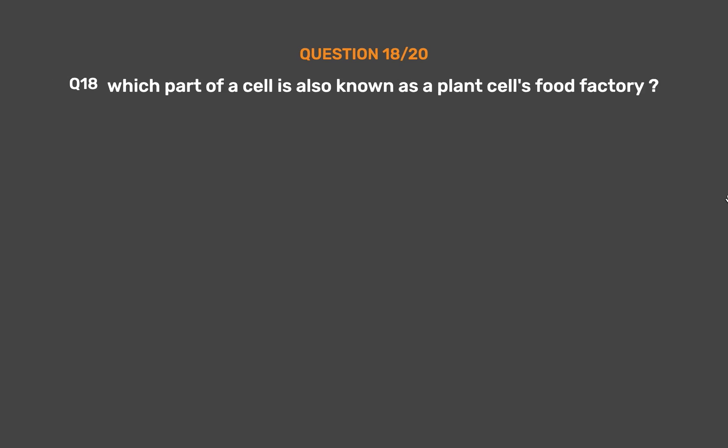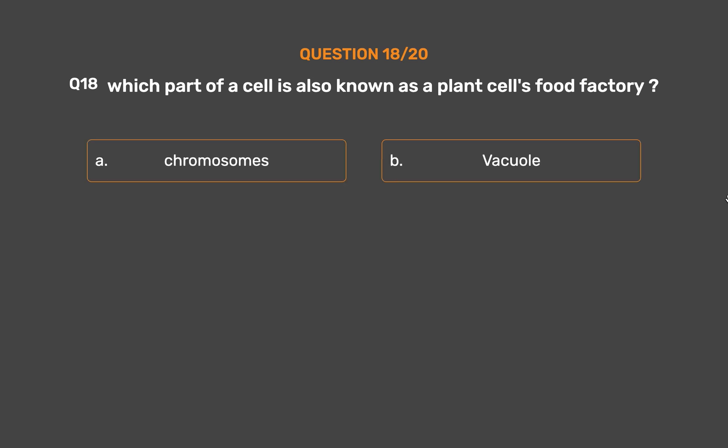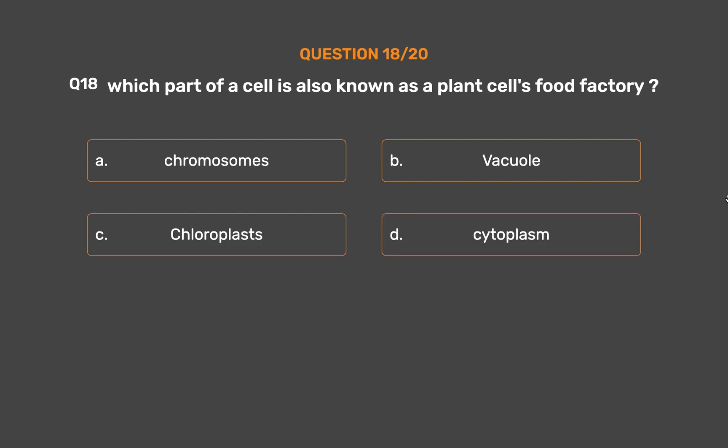Question number 18. Which part of a cell is also known as a plant cell's food factory? Option A: Chromosomes. Option B: Vacuole. Option C: Chloroplasts. Option D: Cytoplasm.